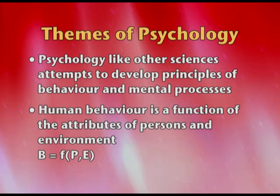The second theme is B = f(Person × Environment): behavior is a function of the person and the environment. Psychology deals with two aspects — the natural genetic basis inherited from ancestors, which sets limits we cannot alter, and the environmental aspect — family, parenting, schooling — which shapes the person within those natural limits.